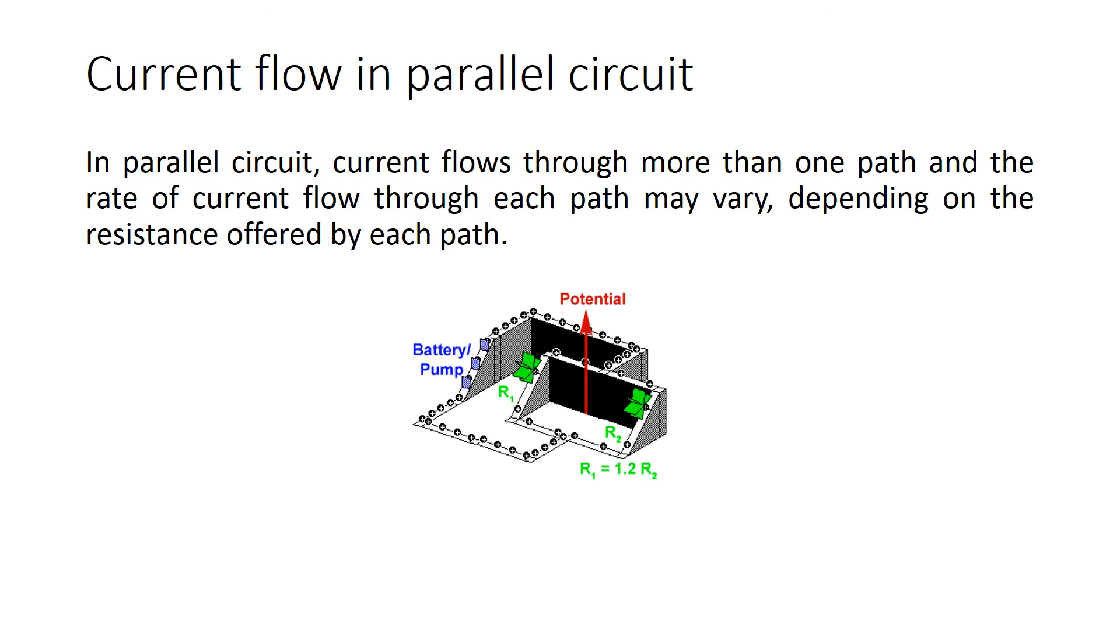Current flow in parallel circuit. In parallel circuit, current flows through more than one path and the rate of current flow through each path may vary, depending on the resistance offered by each path.